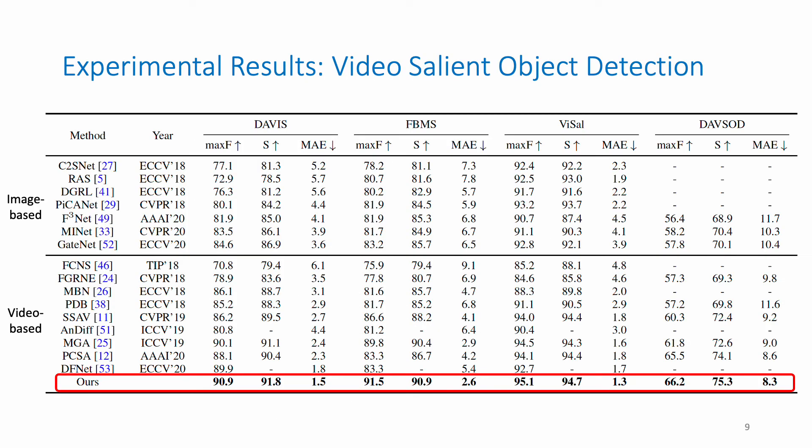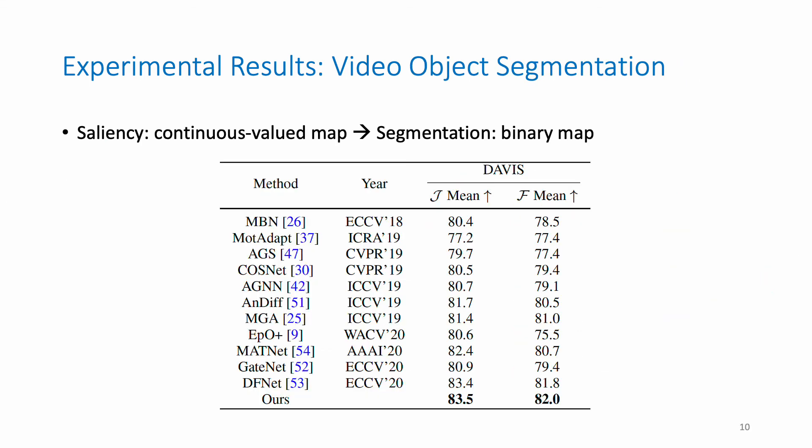Here we show the experimental results of video salient object detection. Our method achieves the best performance in all datasets. Here are the experimental results of video object segmentation on the DAVIS dataset. We also show that the proposed method outperforms existing approaches.